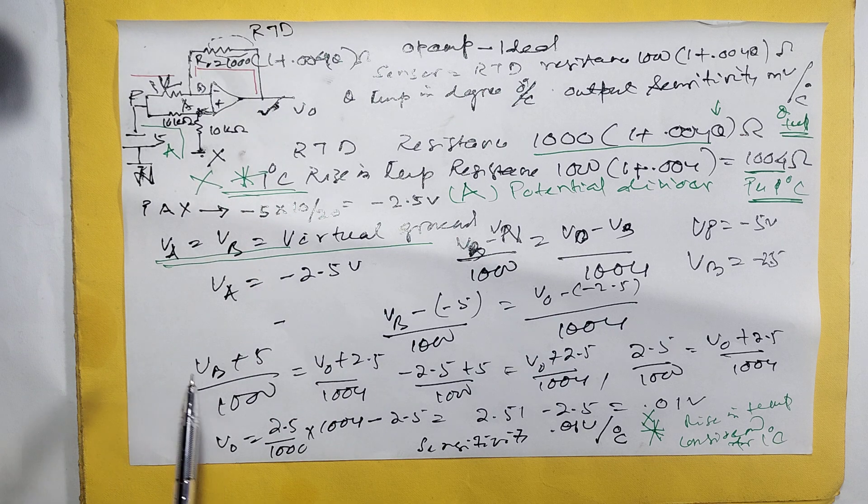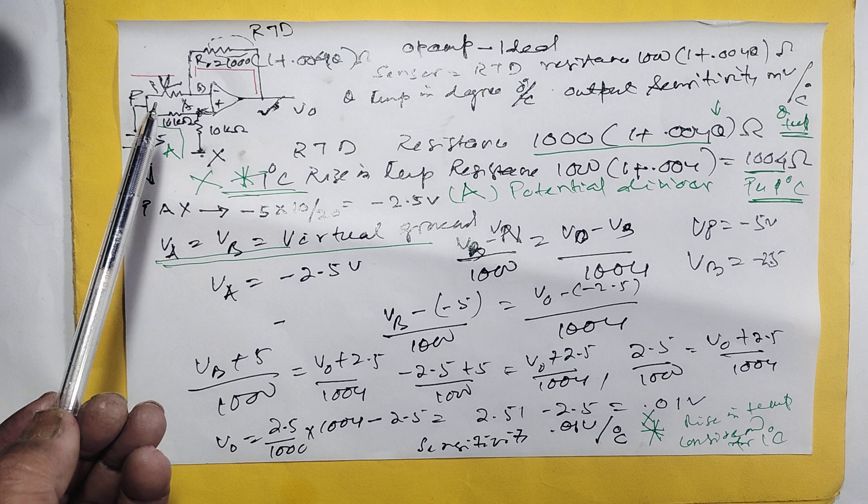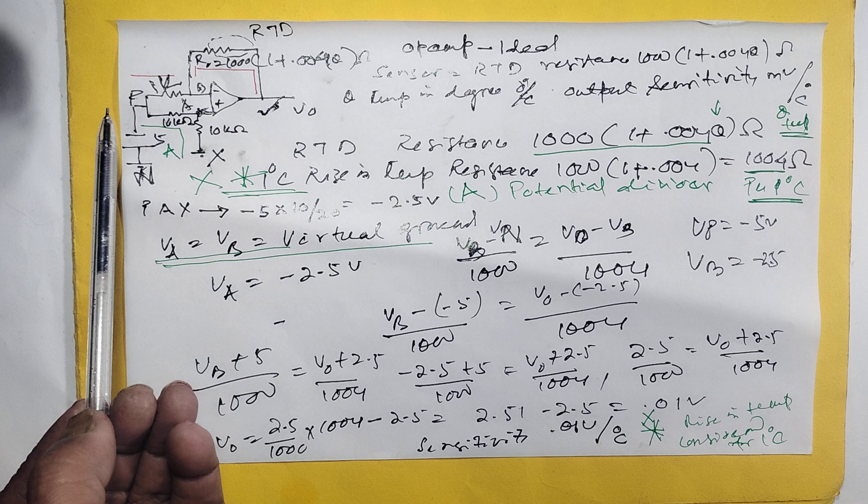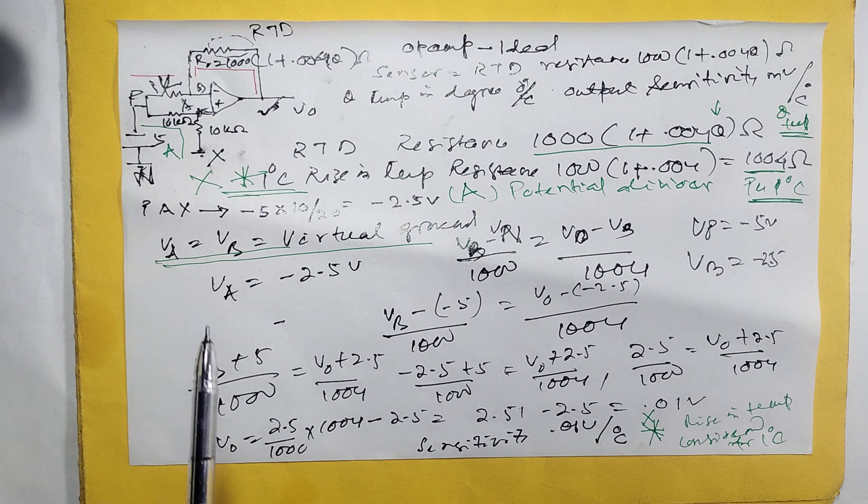So if you solve it, we know VB is equal to VA is equal to minus 2.5. And VN is minus 5. If you solve it...